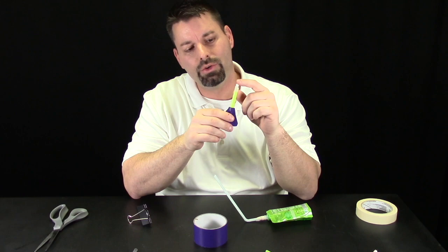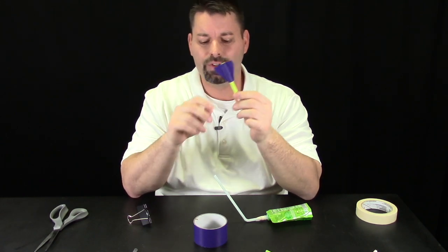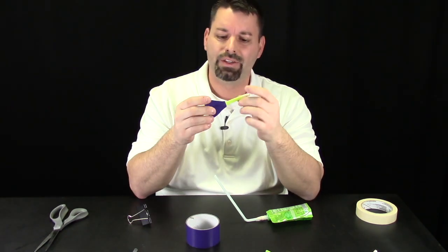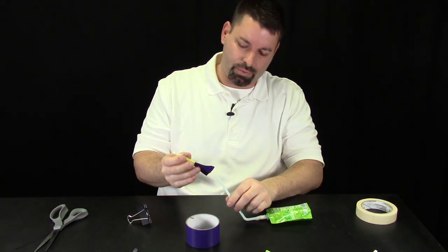For this rocket I used the Q-tip for our nose cone and decided to try to put some fins on using some duct tape to see if we could get this rocket to fly a little straighter. Let's see how this one works.